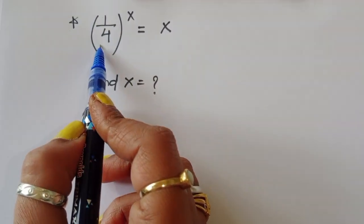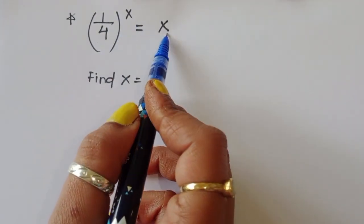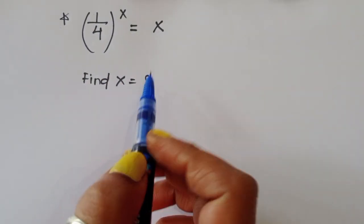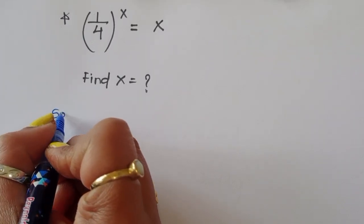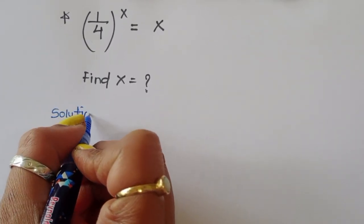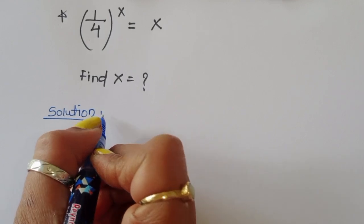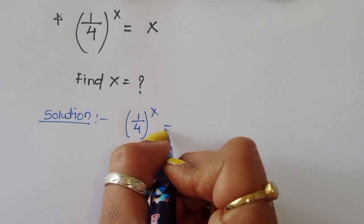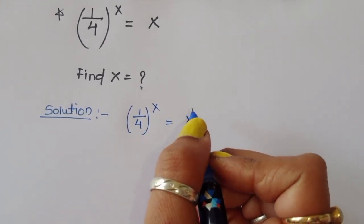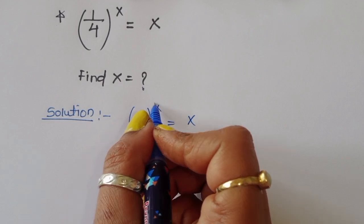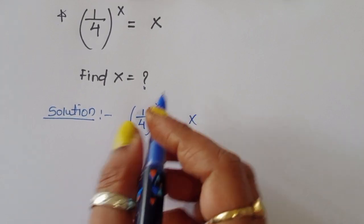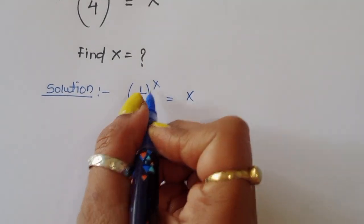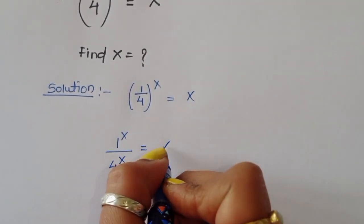The question is: given (1/4)^x = x, we have to find out the value of x. We can write this as 1 divided by 4^x is equal to x, using the formula (a/b)^m = a^m / b^m.